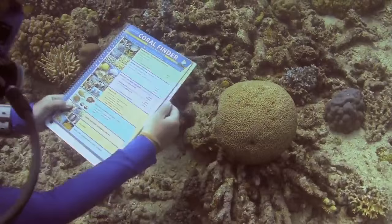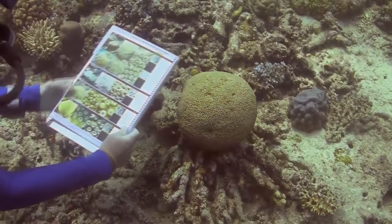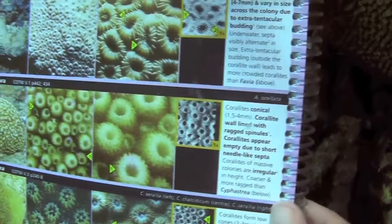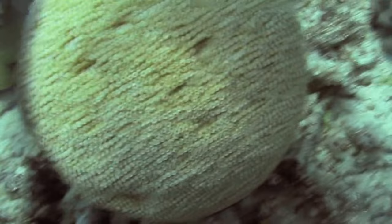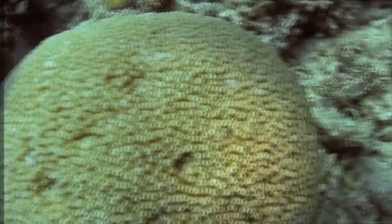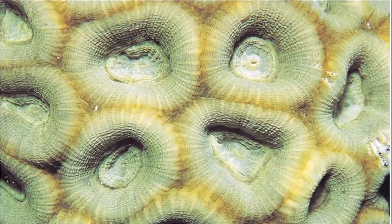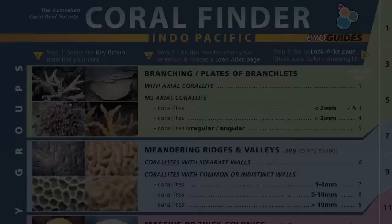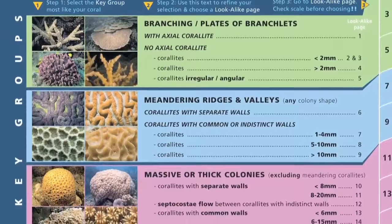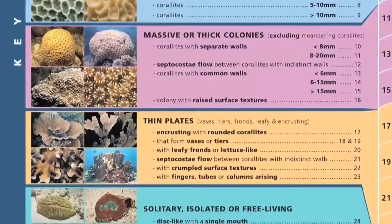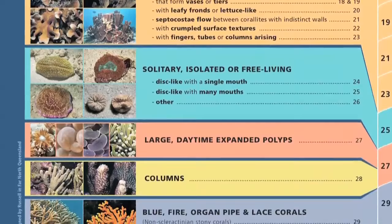That finishes our epic journey through the rounded coralite learning group. Chunkalising the problem helps the human mind keep the coral chaos under control. By mastering the coral finder's glossary terms, key groups, and learning groups, you have the main tools needed to identify about 70 hard coral genera. Here are a couple of general tips: some Fabia-like species can look as though they have common walls — if in doubt, waft water over the polyps, encouraging them to withdraw, revealing a subtle separation. Always keep an open mind, and be prepared to change key group, even if it needs to bend the logic a bit.